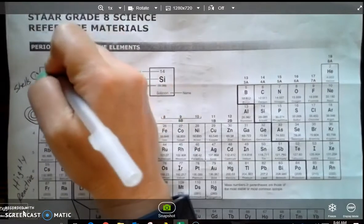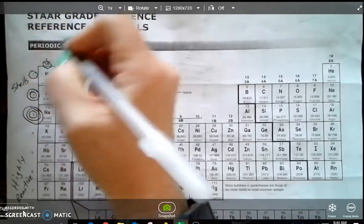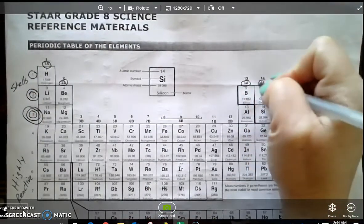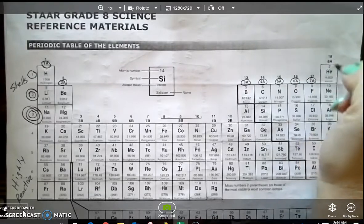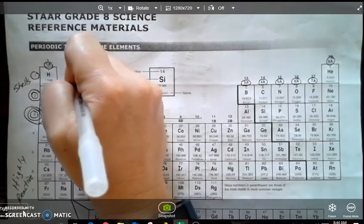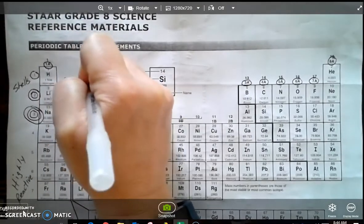All right, we're also going to go here and circle the 1A, the 2A, skip a few, to 3A, 4A, 5A, 6A, 7A, and 8A. These we are going to go ahead and label as our valence electrons.